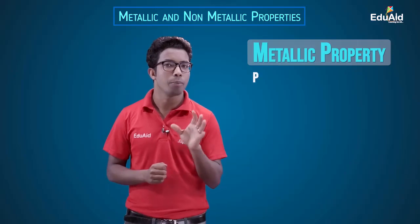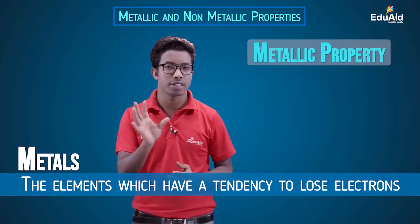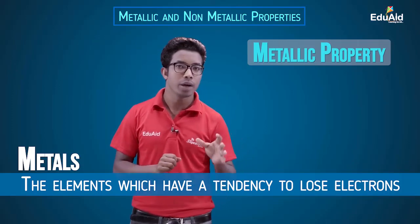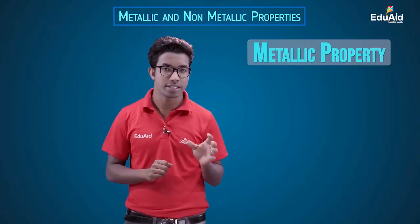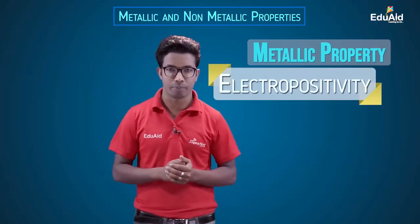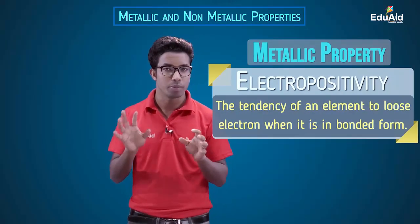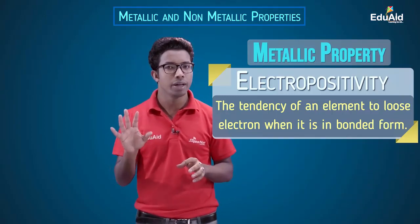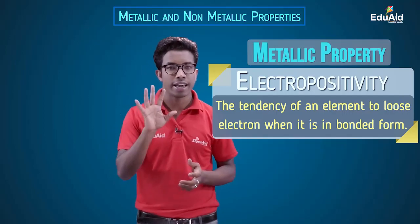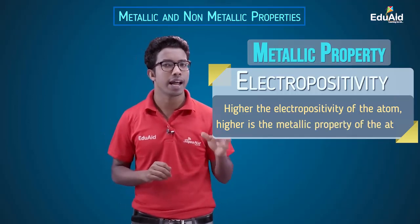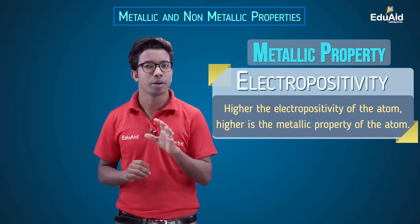Let's start with metallic properties. The term metallic property means the properties of metals. Metals are those elements which have the tendency to lose electrons when they are in bonded form. That tendency of losing electrons is defined by the term electropositivity. Electropositivity is applicable when atoms are in bonded form — the ability of the atom to lose electrons. Higher the electropositivity, the higher the tendency to lose electrons, and so the metallic nature of the atom is more.